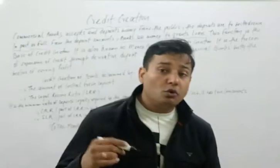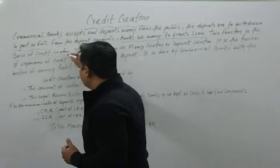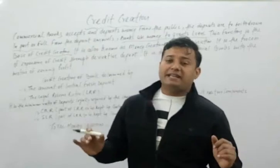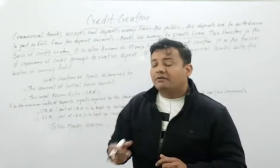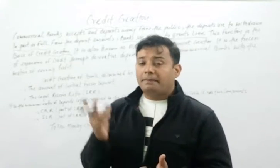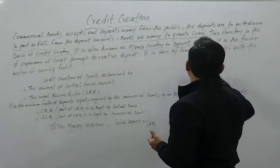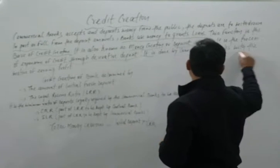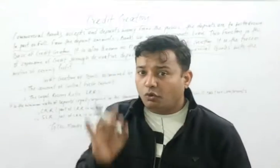When a bank provides loans, a specific amount of money passes on — this function is the basic creation of credit in the market. It is also known as money creation. It is the process of expansion of credit through derivative deposits. It is done by commercial banks with the motive of earning profit. Look out the words that have been underlined for your sake.